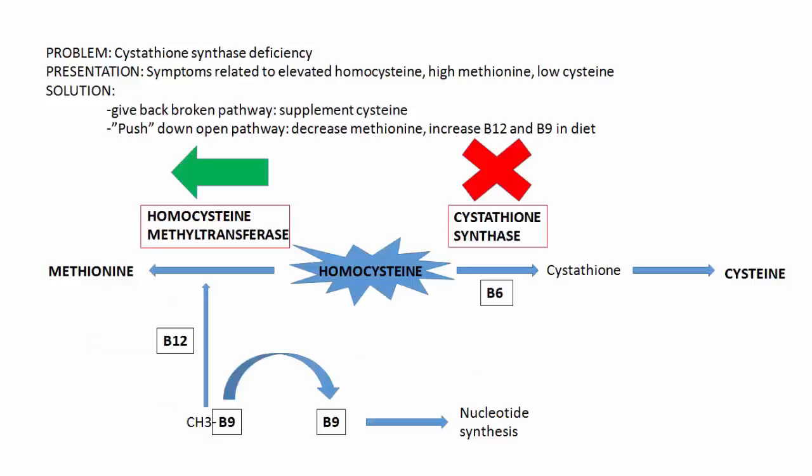Let's take a look at an example. Let's say our problem is a cystathionine synthase deficiency, which is cutting off our pathway on the right side — we just don't have that enzyme. The presentation is going to be symptoms related to elevated homocysteine, but in addition you're going to have high methionine and low cystine. This is because you can't move down the right-sided pathway, so the body starts shunting you down the left-sided pathway.